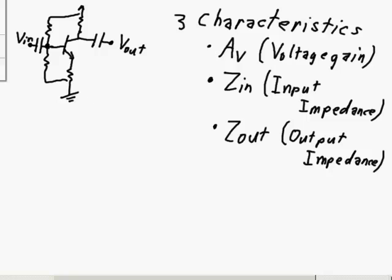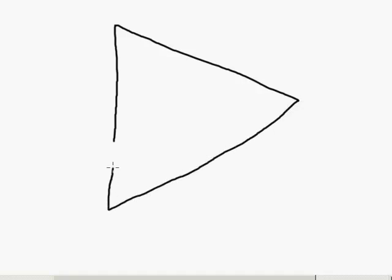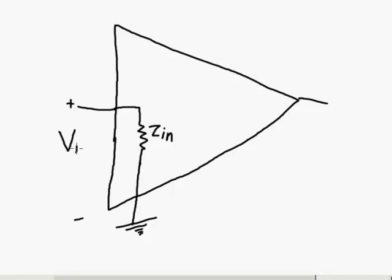So let's clear the screen here and redraw a general amplifier schematic representation. So this can be representative of any type of amplifier, whether it's a BJT or a FET amplifier or an op-amp or whatever. Okay, so here's our big triangle. We've got our input and we've got our output. And now over here on the input is our input impedance, our Zin.